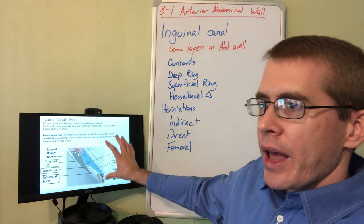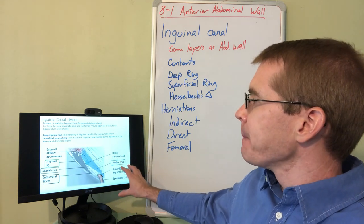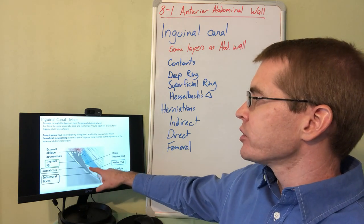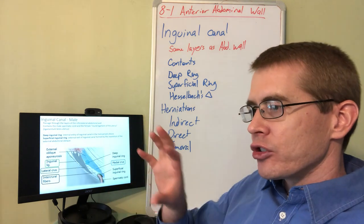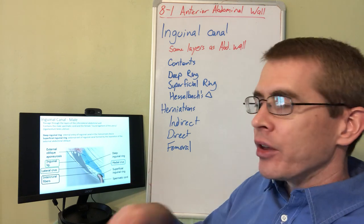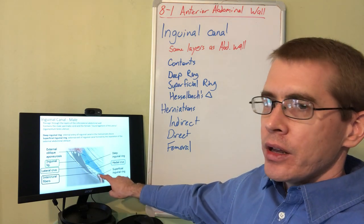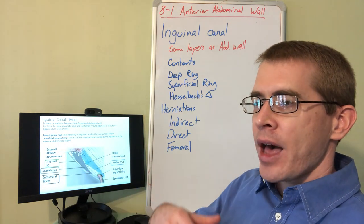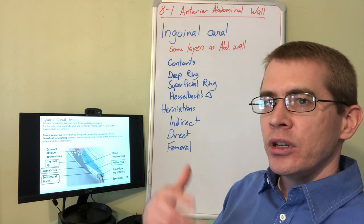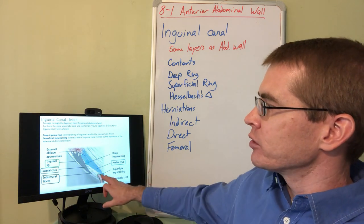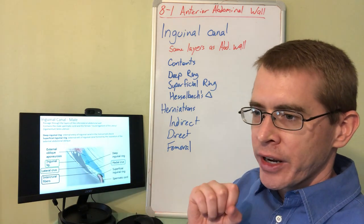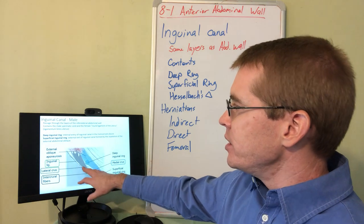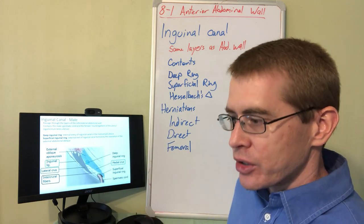Now let's look at the external anatomy of the inguinal canal. The inguinal canal is composed of an imperfection or opening between layers of fascia. There are two openings: the superficial inguinal ring, caused by an opening in the aponeurosis of the external abdominal oblique, and the deep inguinal ring, which opens into the peritoneal cavity through the transversalis fascia.